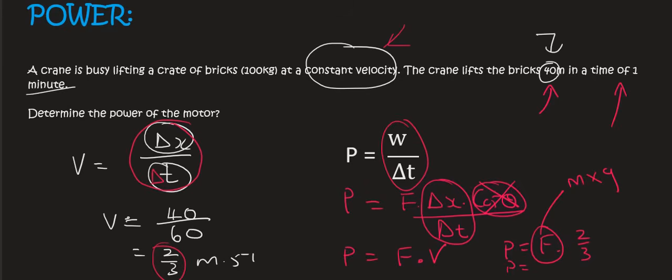And so you would have said power is equal to the mass of the bricks, which is 100, times by 9.8, times by 2 over 3. And if you do that all on the calculator, you're going to get the same answer. 653.33.